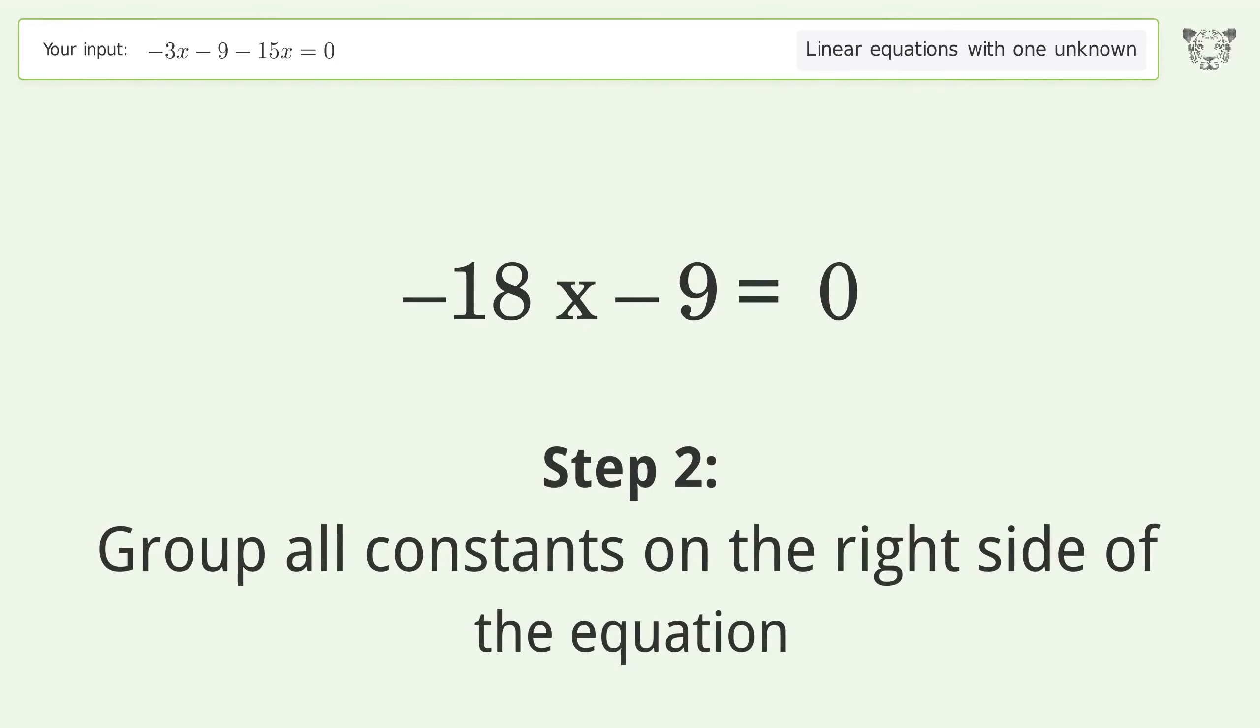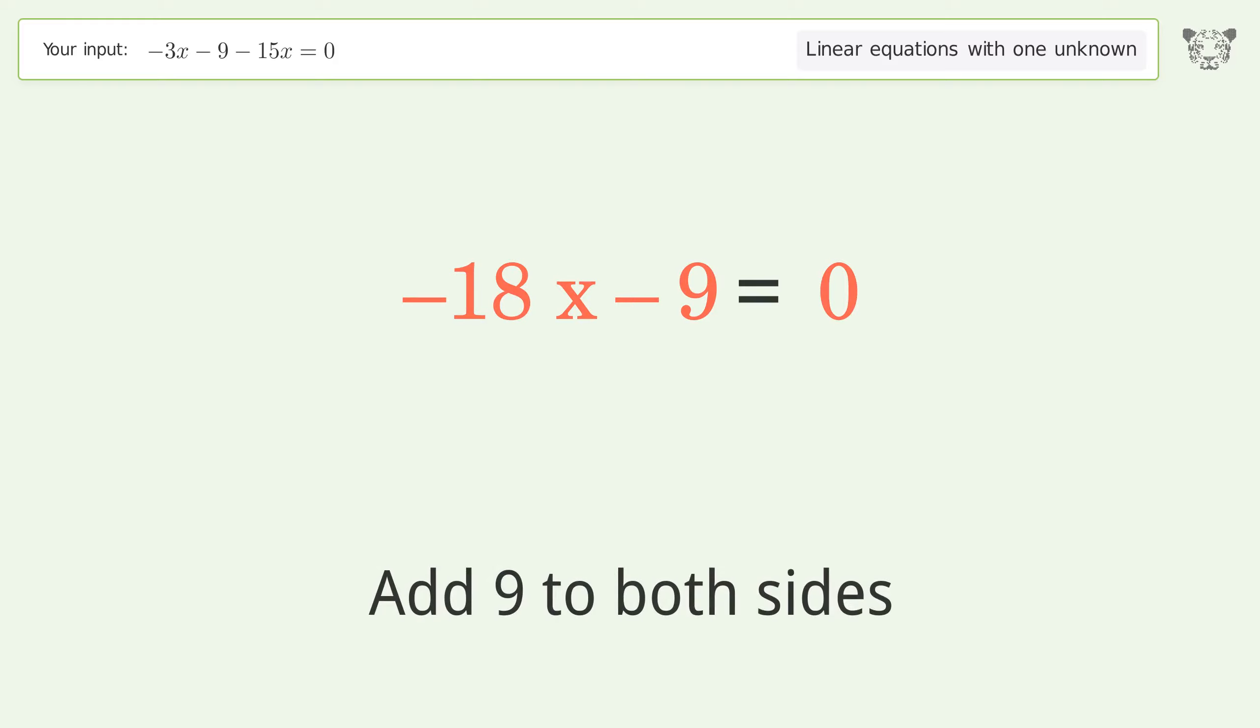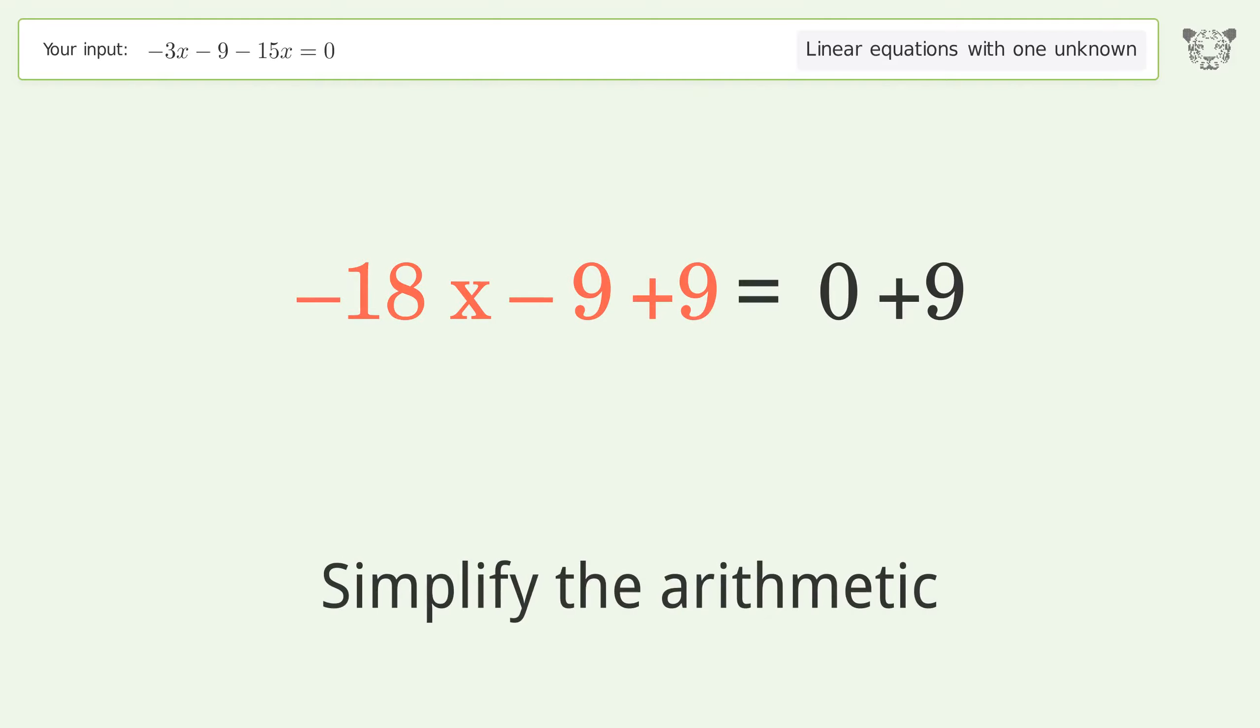Group all constants on the right side of the equation. Add 9 to both sides. Simplify the arithmetic.